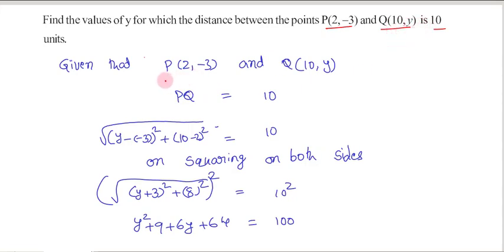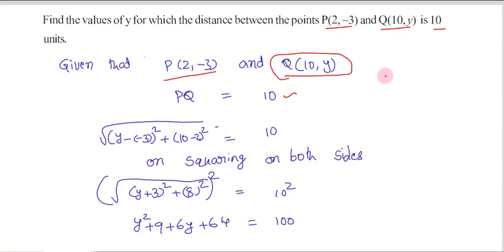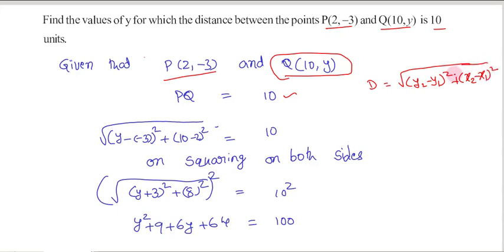Given that point P is (2, -3) and Q is (10, y), and the distance between P and Q is 10 units. We know that the distance formula is D = √((y2 - y1)² + (x2 - x1)²). By using this formula, I am going to calculate the distance between them, which is equal to 10.